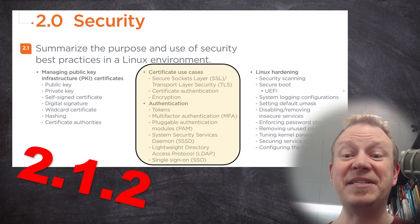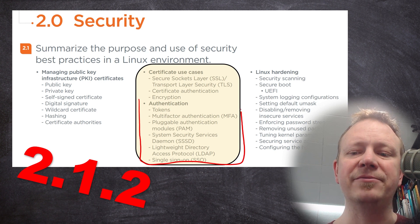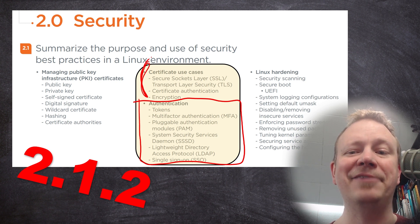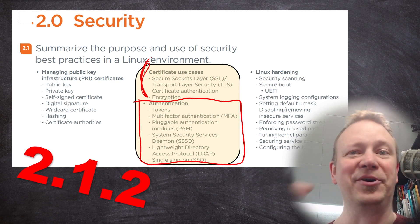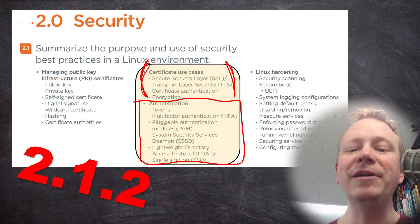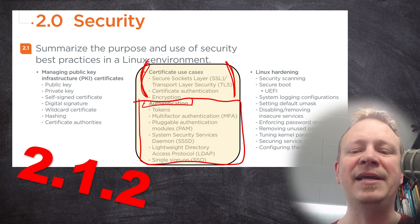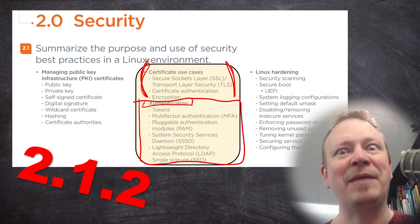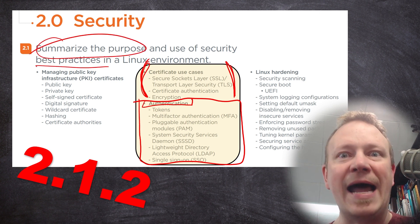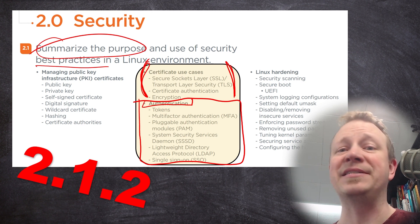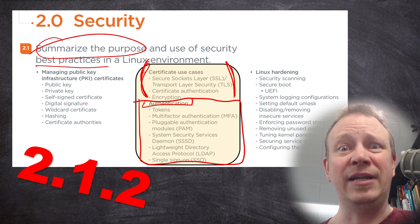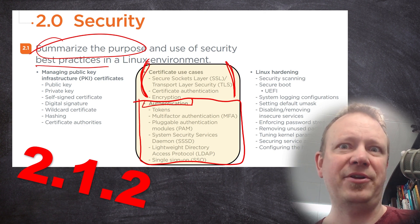Let's get down to the next section of the Linux Plus objectives. Specifically, we are going to cover this part right here. I actually got overzealous in our last video, and I covered how TLS and SSL stuff works. So if you want to see that again, look at the last video where we covered it, section 2.1.1, but we're going to focus on authentication. I have to remind myself that this is all about best practices and summarizing the purpose. We're not going to get into the nitty gritty of configuring any of these services — I just want you to understand what they are, why they exist, and what might be a good way to utilize them in your Linux system so that you can answer the questions in the test.